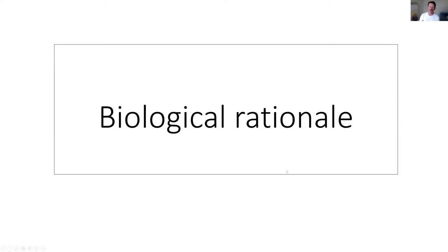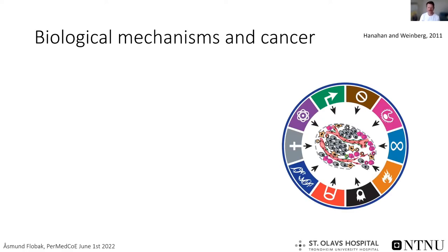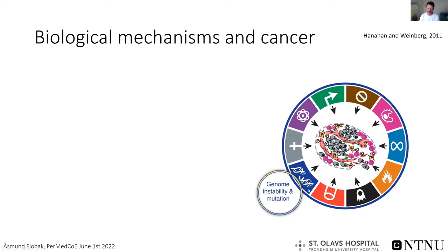We are now at the point where we do understand a lot of the biology at the molecular level. This is from the famous publication by Hanahan and Weinberg on cancer — how we conceive cancer today at the molecular and cellular level. Cancer cells — you see the tumor in the center, cancer cells in gray — but the tumor itself is comprised of many other cell types like immune cells in pink or endothelial cells as part of the vasculature.